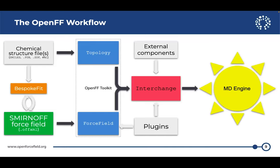If you parameterize your system and want to switch to a different force field, that's fine. The topology object itself, before it's ever met a force field, is serializable — you can save it to disk, load it up later, and switch out your force field. If you want to use a different engine later, you could save your interchange. Totally serializable — come back to it, export to a different format, modify whatever you want in the interchange.